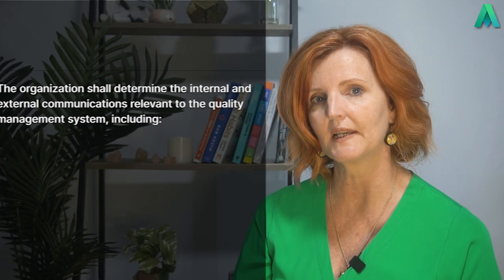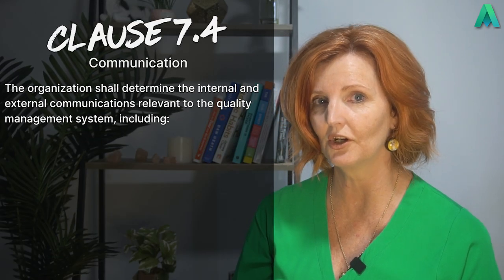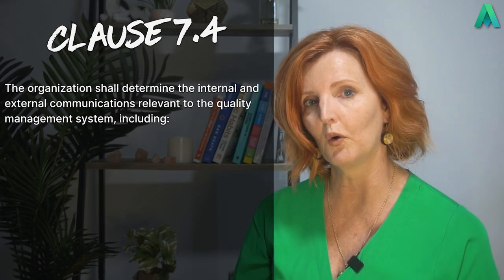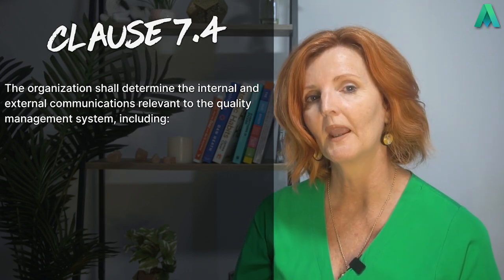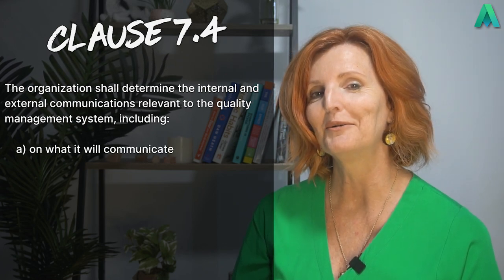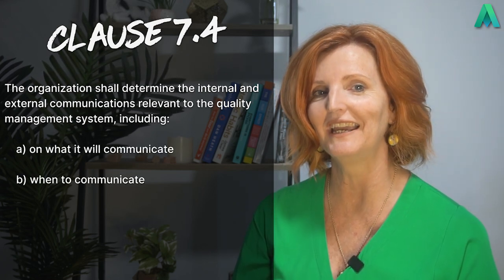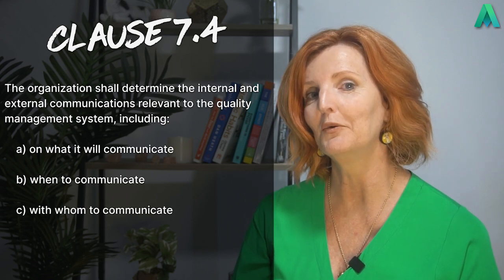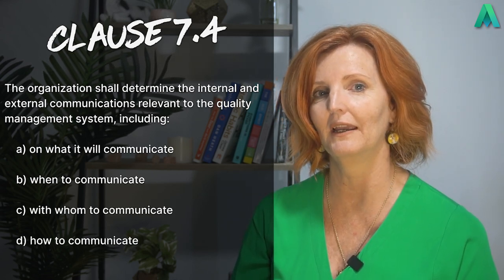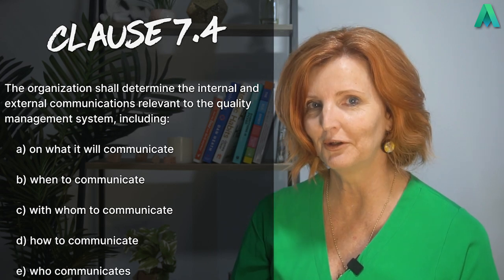Let's take a look at what clause 7.4 wants us to do. This clause states that the organisation shall determine the internal and external communications relevant to the quality management system, including: a) on what it will communicate, b) when to communicate, c) with whom to communicate, d) how to communicate, and e) who communicates.